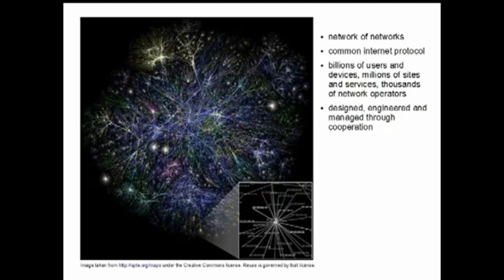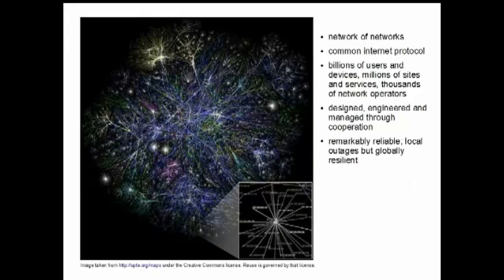The internet is not only designed through cooperation, although each network operator designs their own network in a way that suits them. In a larger sense it is a collaborative design that uses these protocols, and the interconnection between networks is done in a very formal, structural way that enables communications between networks without necessarily exposing how each network works internally. The way traffic is passed is done through mutual cooperation, not through a regulatory body as in the telephone network.